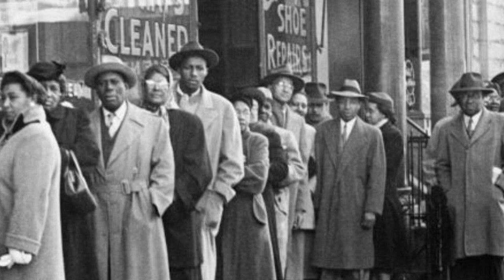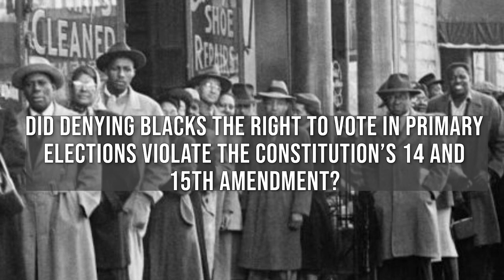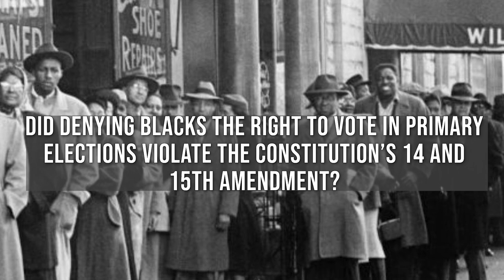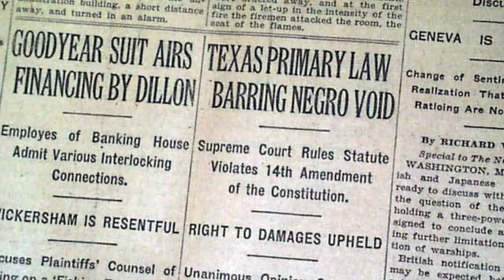The Supreme Court was asked to consider: did denying Black Americans the right to vote in a primary election violate the Constitution's 14th and 15th Amendments? In a unanimous decision, the Supreme Court ruled that the Texas law allowing white-only primaries was unconstitutional, and that political parties could not exclude voters on the basis of race. The Court held that the right to vote was a fundamental right guaranteed by the Constitution, and that denial of that right on the basis of race violated the 14th and 15th Amendments.